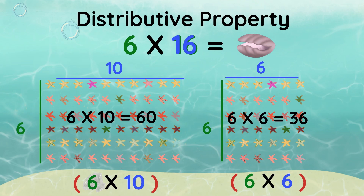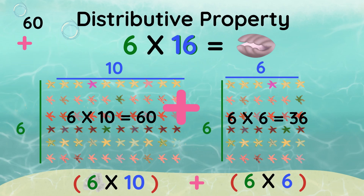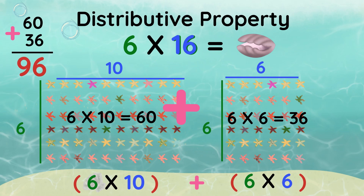Finally, we add them together. 60 plus 36 equals 96. That means 6 times 16 equals 96.